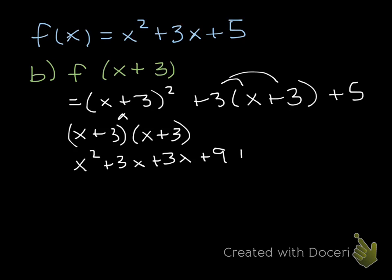Over here we'll distribute, so then I have plus 3x plus 9, and then plus 5. Now we're going to go through and add our like terms. So I have x squared. Here I have a bunch of x's, so I have 9x in the middle.